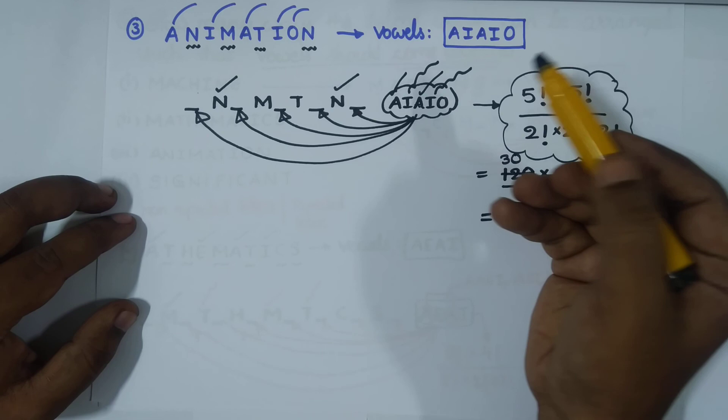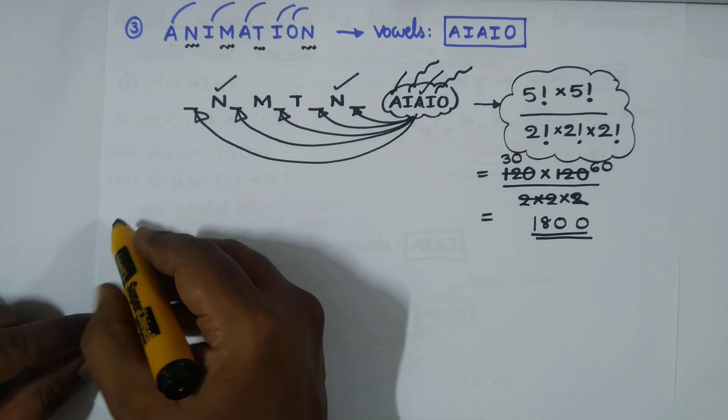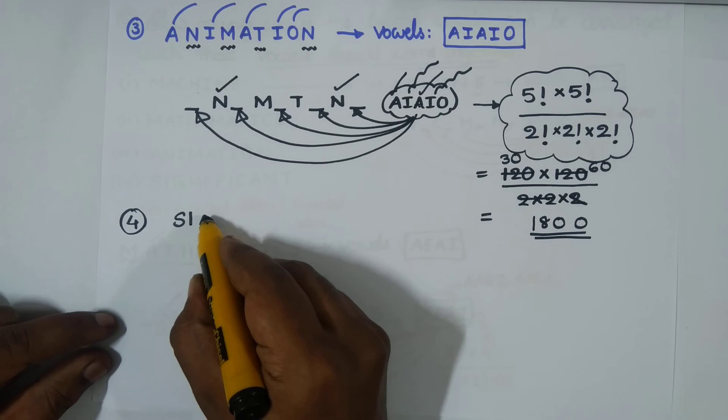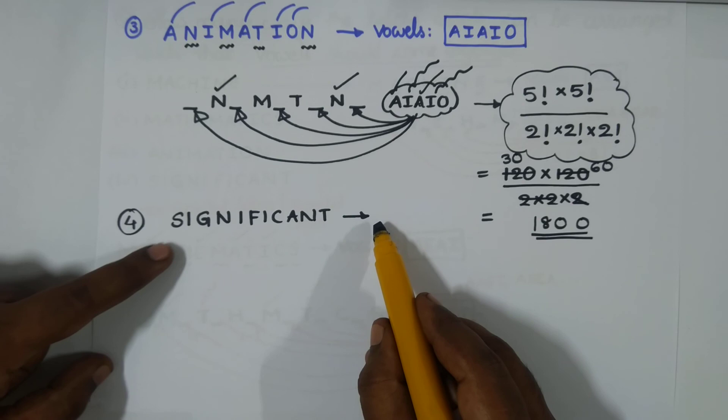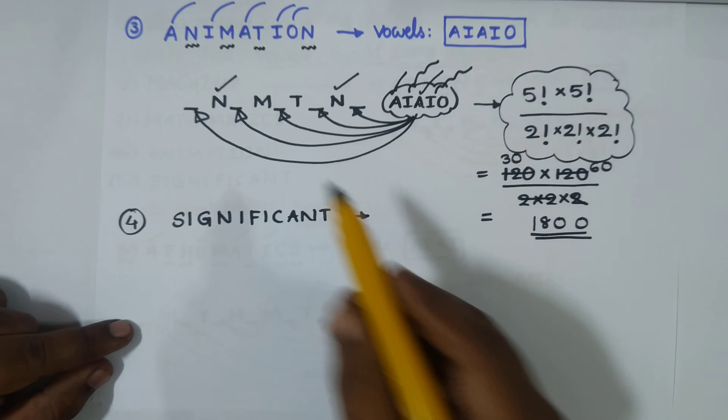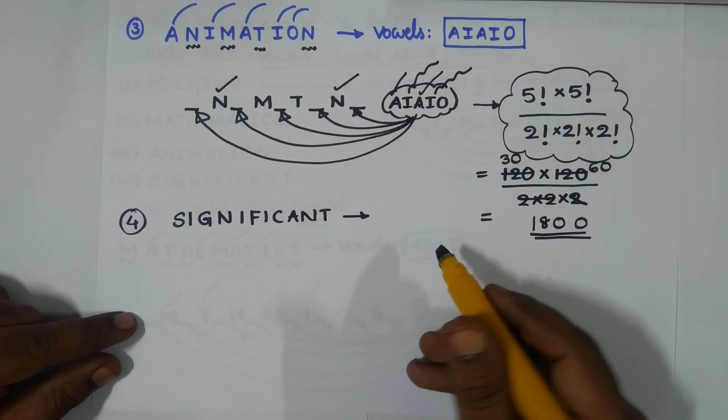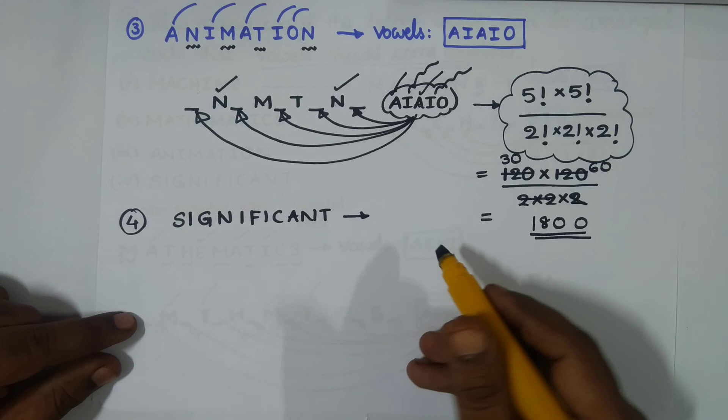The fourth word is SIGNIFICANT. Please solve it on your own: segregate the vowels, count the blanks, note any repetitions in the denominator, and find the final answer. Post your answer in the comment section below. That's it for today — thank you!